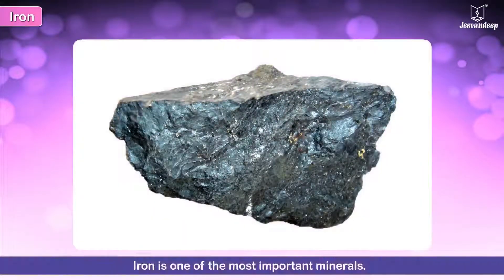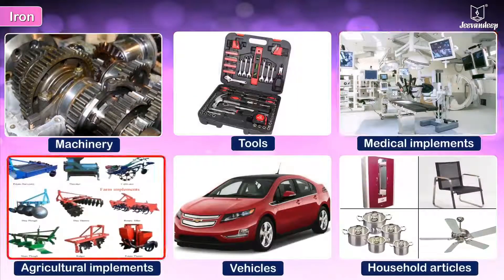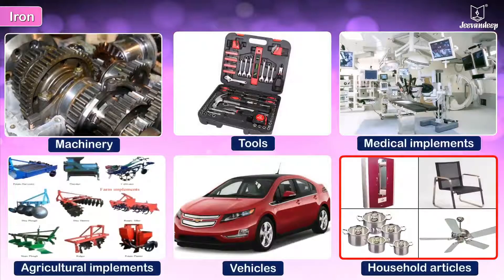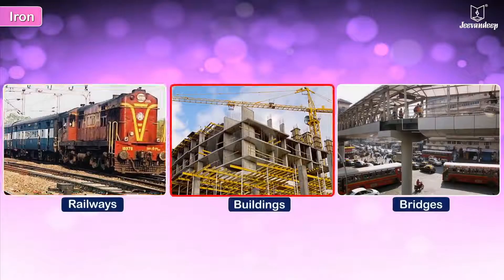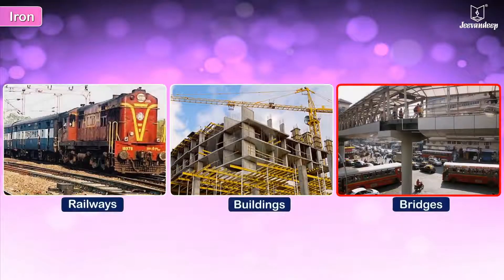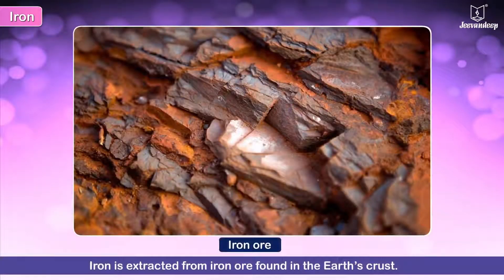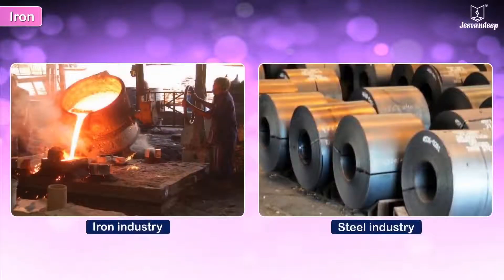Iron is one of the most important minerals and is used in the manufacture of machinery and tools, medical and agricultural implements, vehicles, and a host of household articles. It is also used extensively in railways, buildings, and bridges. Iron is extracted from iron ore found in the earth's crust, and the iron and steel industry has contributed significantly to the progress of the country.